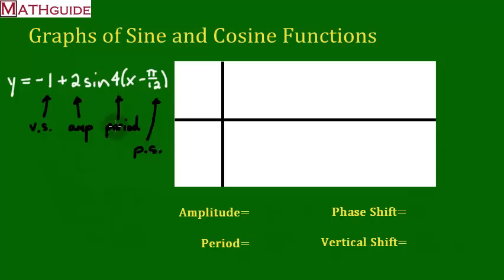There's a lot of detail to this problem. A lot of things happening. Let's get the easy stuff out of the way. Amplitude. This number that's in front of the sine, just take the absolute value of it. So the absolute value of 2 is 2. So it's got an amplitude of 2.